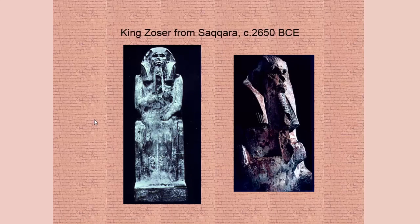We'll end by looking at King Zozer again from Saqqara, 2650 BCE. His Ka statue is watching over us through eternity.